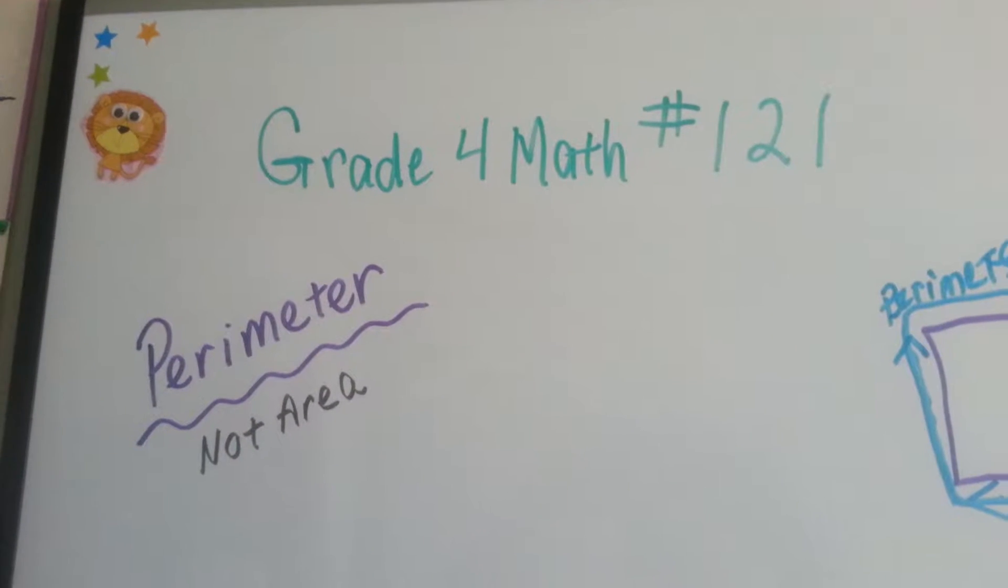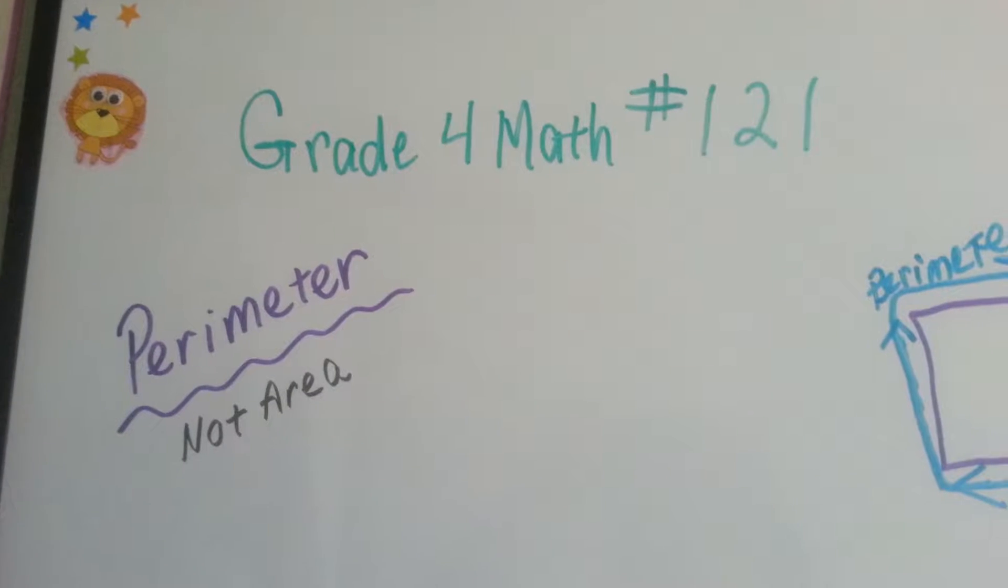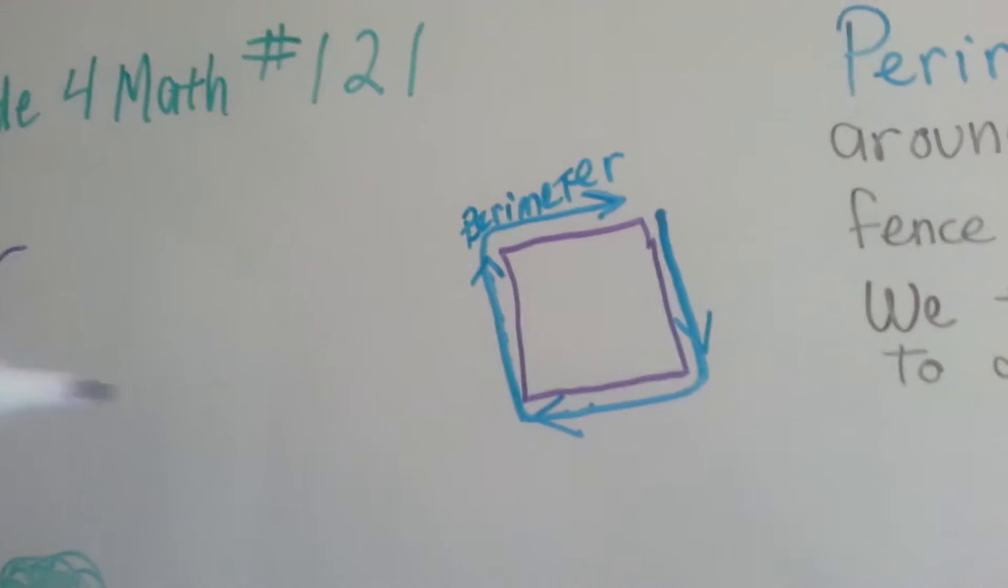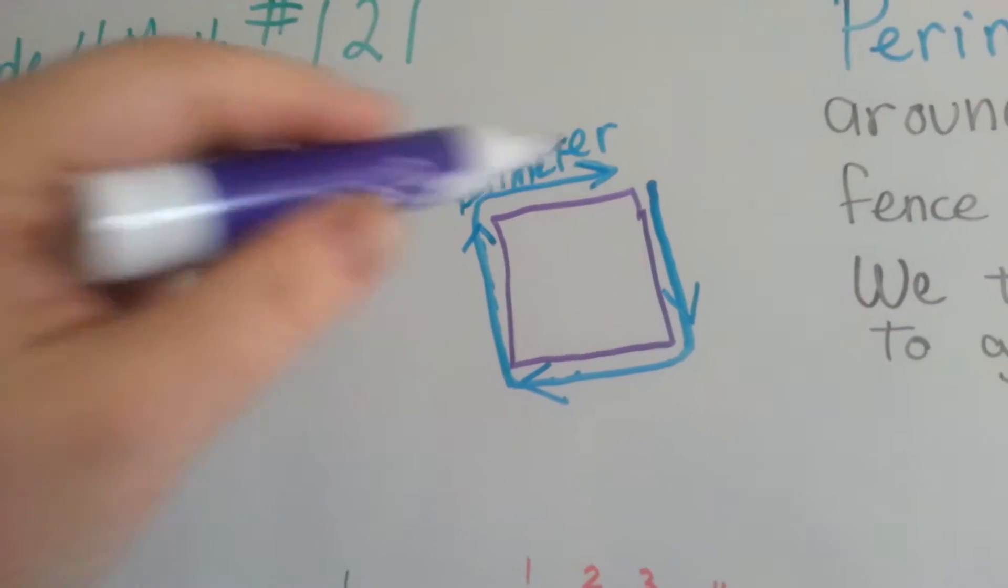Grade 4 math number 121. Perimeter, not area. Going around the outside of something, like a fence. That's the perimeter.